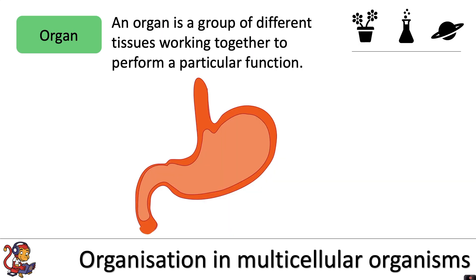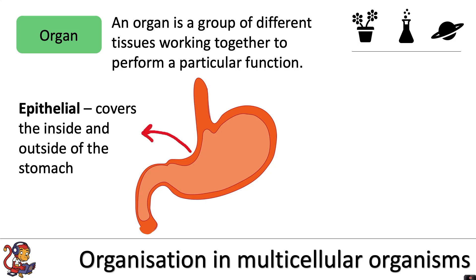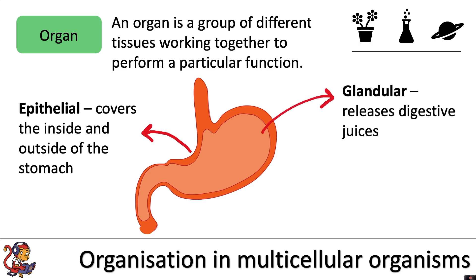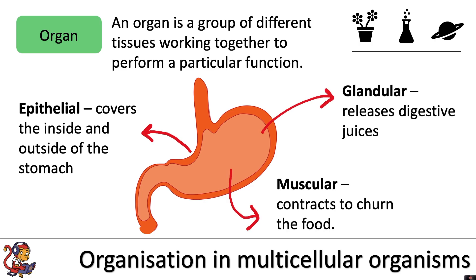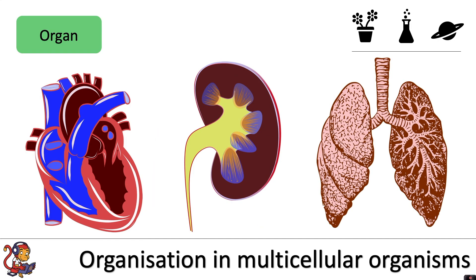The next level up is an organ. An organ is a group of different tissues working together to perform a particular function. For example, here we've got a diagram of the stomach, and the stomach is an example of an organ. Some examples of tissues within the stomach are the epithelial tissue, that covers the inside and outside of the stomach, glandular tissue that releases digestive juices, and muscular tissue that contracts to churn the food. So these three tissues and many more will work together to perform digestion within the stomach. Other examples of organs include the heart, the kidney, and the lungs.